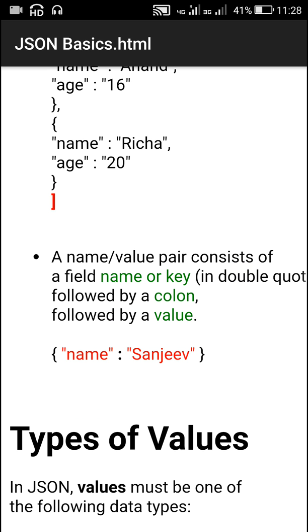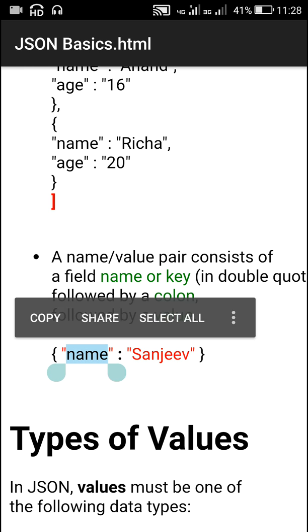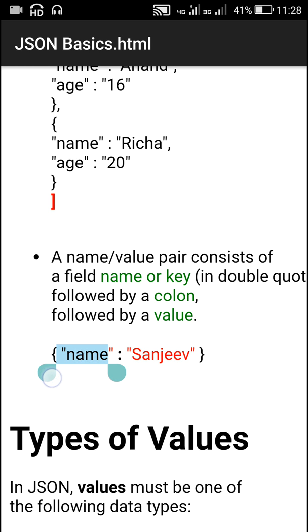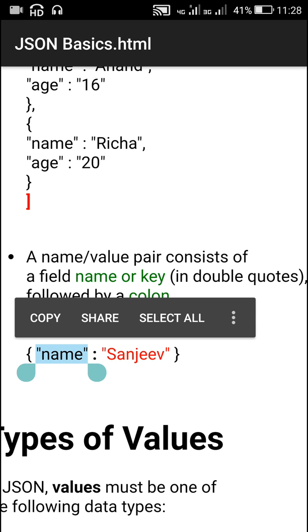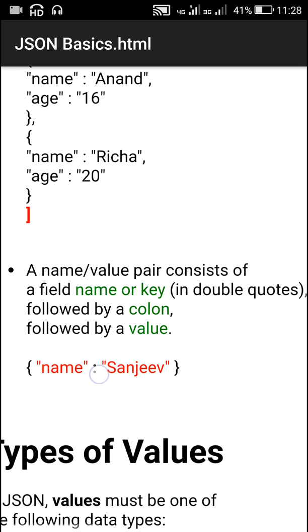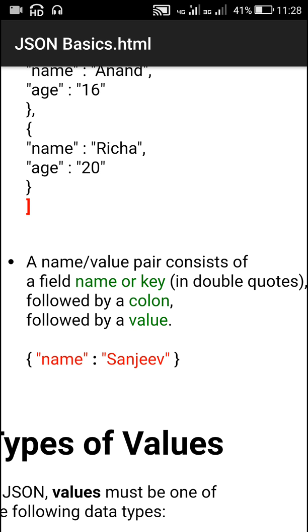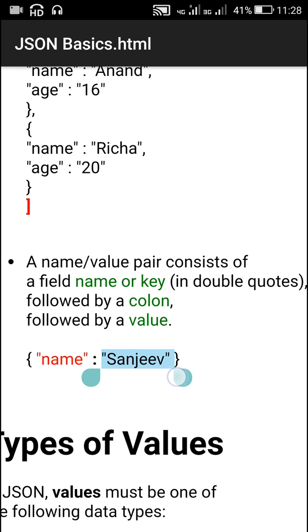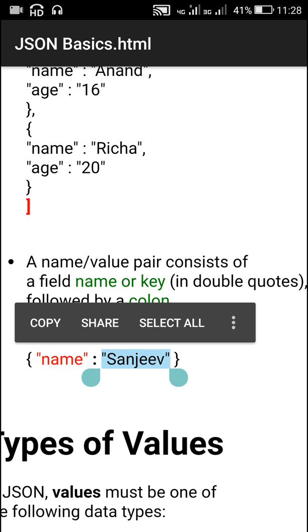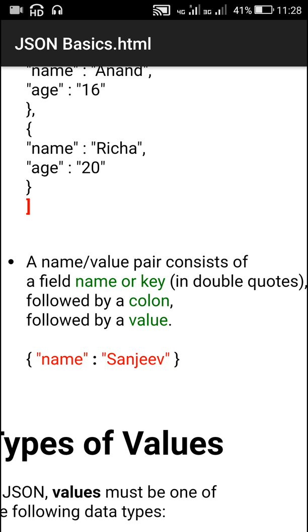A name-value pair consists of a field name or key — which is always a string enclosed in double quotes — followed by a colon, followed by a value. The value is usually a string but it can be of other types also.